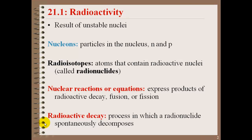In nuclear chemistry, we're going to be talking about radioactivity. This occurs as a result of unstable nuclei. Nucleons are particles in the nucleus, neutrons and protons. Radioisotopes are atoms that contain radioactive nuclei. These are isotopes of elements that are radioactive.